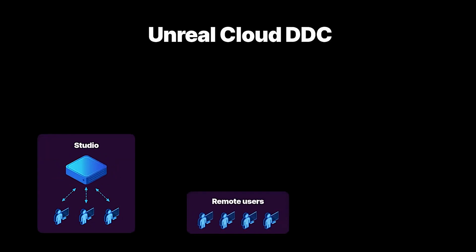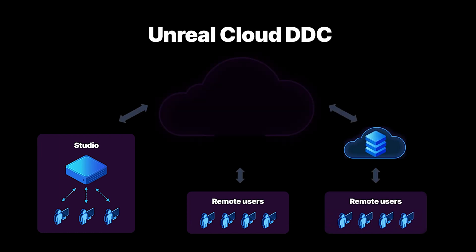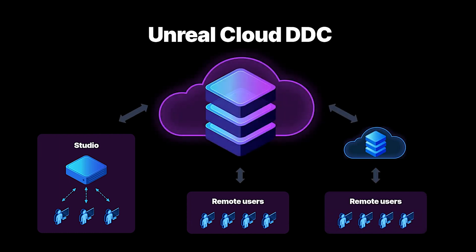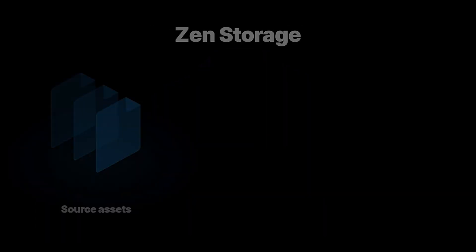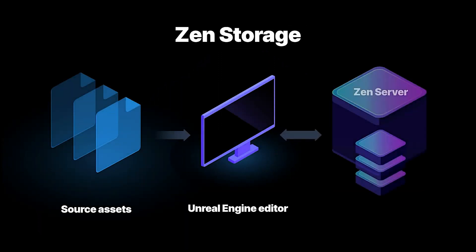New in this release is Unreal Cloud DDC, a self-hosted cloud storage system for the Unreal Engine derived data cache. Designed for distributed users and teams, it enables you to efficiently share Unreal Engine cached data across public network connections. Our local DDC also now uses a new server architecture, offering improved data conditioning performance, faster load times and pipeline workflows, and other benefits.